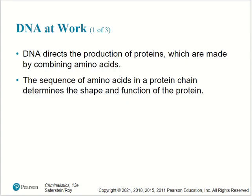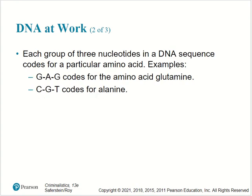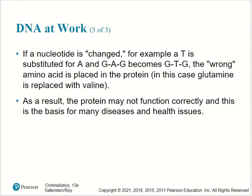DNA directs the production of proteins, which are made by combining amino acids. The sequence of amino acids in a protein chain determines the shape and function of the protein. Each group of three nucleotides in a DNA sequence codes for a particular amino acid — for example, GAG codes for glutamate, and CGT codes for alanine. If a nucleotide is changed, such as a T substituted with an A, and GAG becomes GTG, the wrong amino acid is placed in the protein chain. In this case, glutamate is replaced with valine, and the protein may not function correctly — this is the basis for many diseases and health issues.